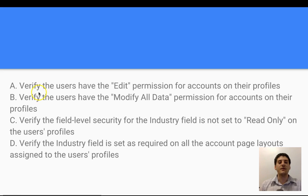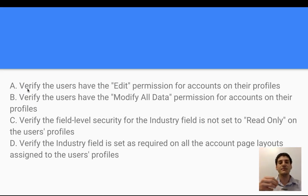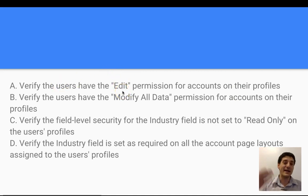The options are: A — verify the users have the edit permission for accounts on their profiles; B — verify the users have the modify all data permission for all accounts on their profiles; C — verify the field level security for the industry field is not set to read only on the user's profiles; D — verify the industry field is set as required on all page layouts assigned to the user profiles. We know immediately that A is incorrect because users are already editing the record, so they don't need the edit permission. Similarly, B is out — the user is already able to modify.